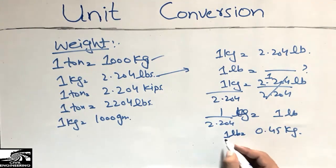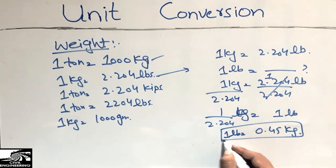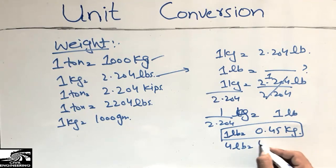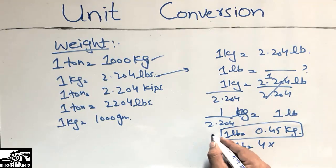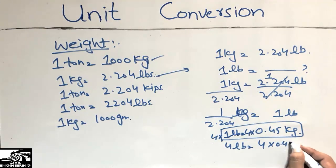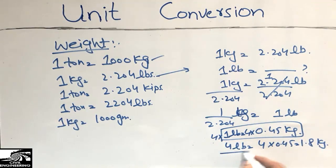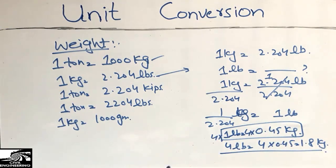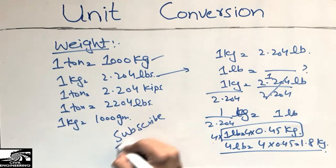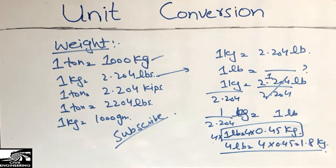If someone tells me how many kilograms are in four pounds, I just multiply both sides by four, and I get four pounds equals 1.8 kilograms. That was all about unit conversion. Hope you understand and hope it helps. Don't forget to subscribe to our channel for more daily engineering videos. Thank you.